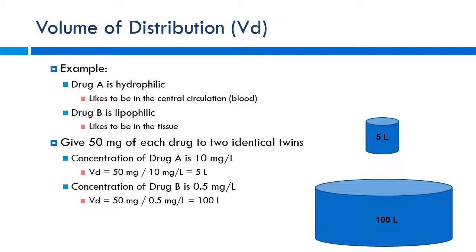An important clinical example: aminoglycoside antibiotics — things like gentamicin, tobramycin, and amikacin — are used in the hospital to treat serious gram-negative infections. They are very hydrophilic, so they have a low volume of distribution and tend to stay within the bloodstream. They also have a narrow therapeutic index — too high and you get renal toxicity and ototoxicity — so serum drug levels must be monitored closely.